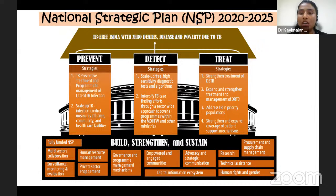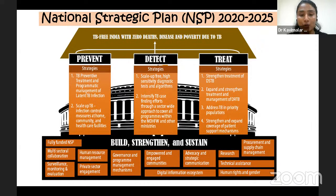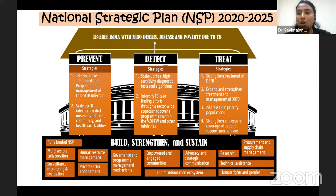Under Treat, the strategy is to strengthen treatment of drug-sensitive TB and drug-resistant TB, and to address TB in priority populations. Coming to the Build pillar, it focuses on multi-sectoral collaboration, surveillance, monitoring and evaluation, human resource management, private sector engagement, empowering communities, and advocacy and strategic communication. In this seminar, we will deal with all strategies under the National Strategic Plan that are related to community outreach.